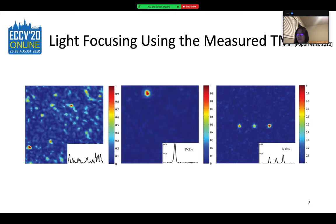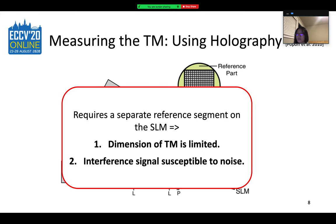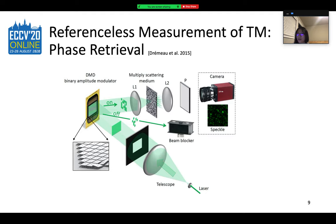After the TM is recovered, light can be focused through the random medium. The holography method relies on a separate reference half to form interference patterns with the controlled segment, and this results in a few disadvantages. The dimension of the TM is limited by the size of the central area on the SLM, and the interference measurements are easily susceptible to noise. Another class of method that does not require measurements with a reference is phase retrieval.